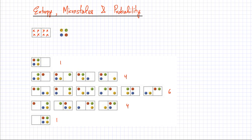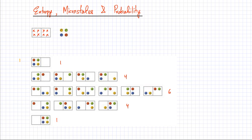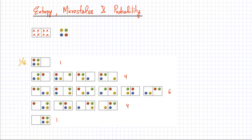Now I'm going to calculate probabilities for each arrangement. Starting with four particles on the left-hand side, there's only one possibility. Counting all possible microstates, the total comes to sixteen. So out of sixteen possibilities, there is only a one-in-sixteen chance of getting that arrangement. For three particles on one side and one on the other, the probability is four out of sixteen.